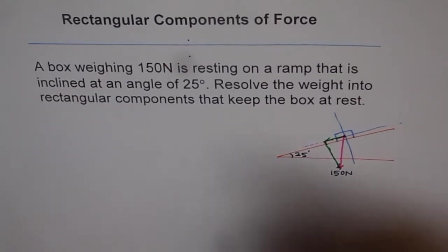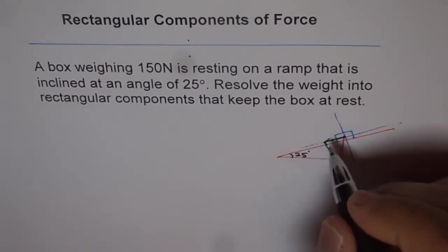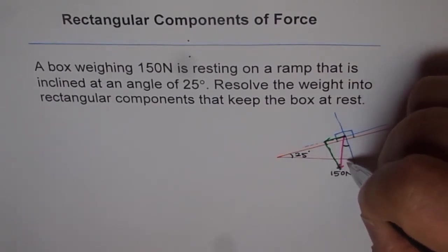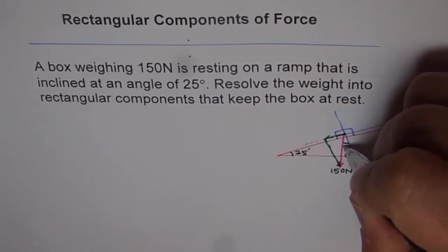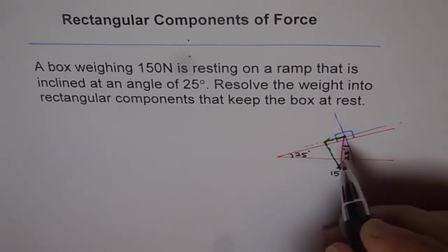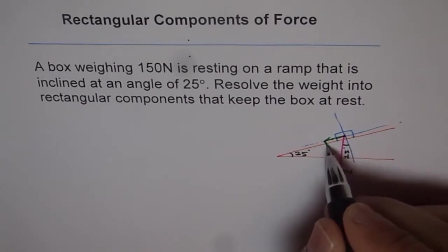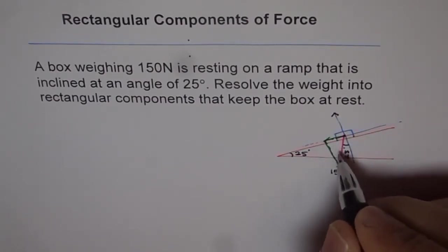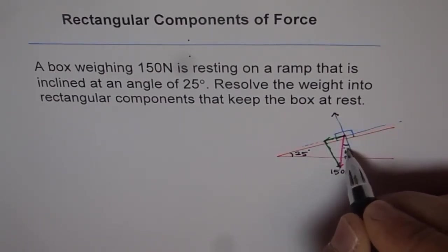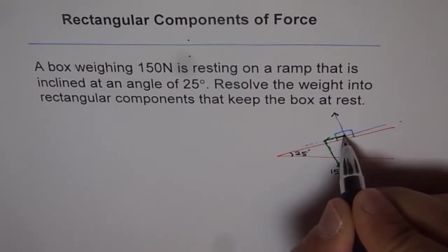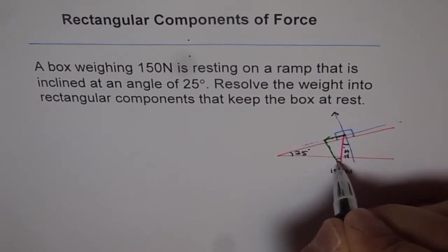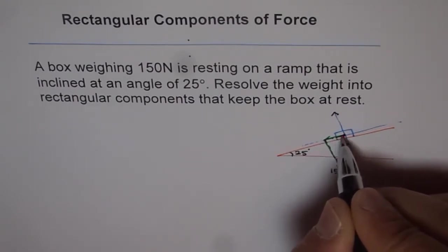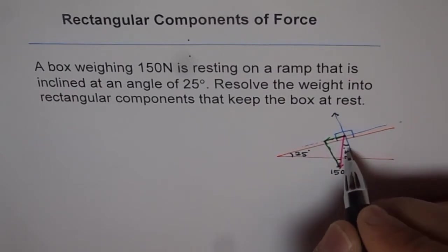Now let's figure out the angles involved. 25 degrees is the inclination angle. Since this side is perpendicular, from similar triangles this angle is also 25 degrees. The component acting against the normal — the normal reaction direction — will be the cosine component with 25 degrees. The component acting along the inclination, where 25 degrees is the opposite side, will be the sine of 25 degrees.